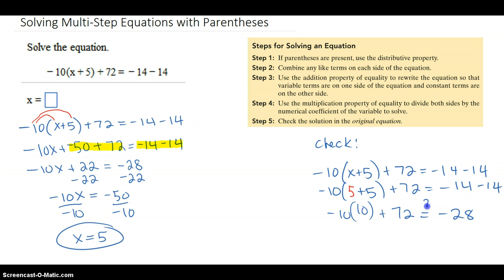I'm just going to see if that's negative 28. Well, it is because this is negative 100 plus 72, which, by the way, is negative 28. So you can see it does check out. Hope that helps!